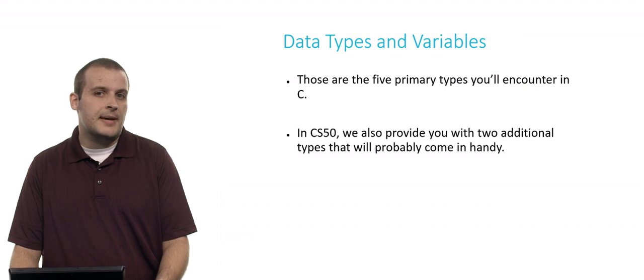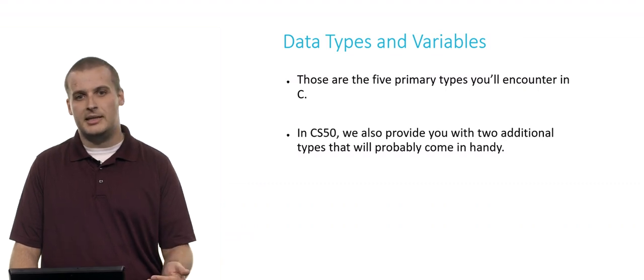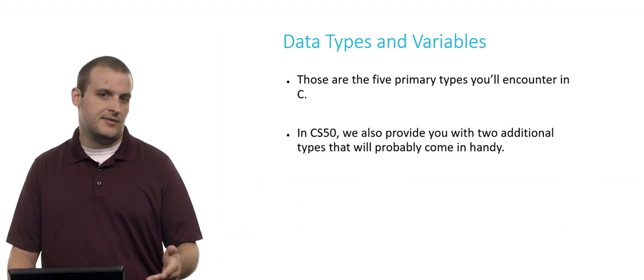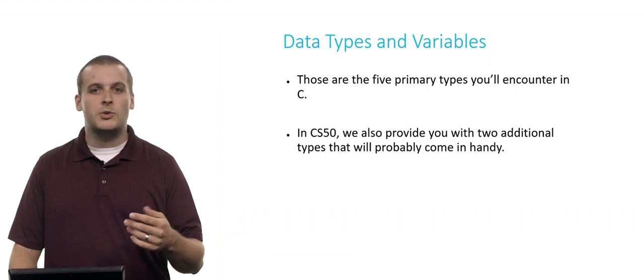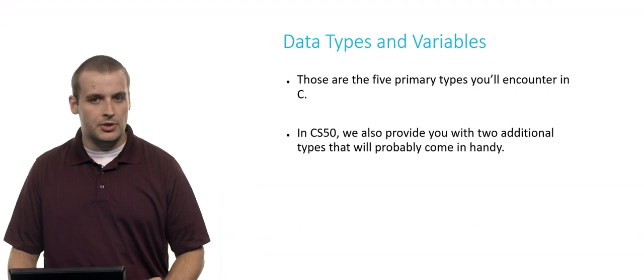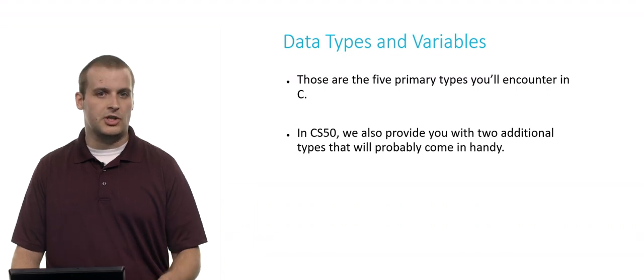All right. So those are the five types that you'll encounter that are built into C. But in CS50, we also have a library, CS50.h, which you can include, and which will provide you with two additional types that you'll probably be able to use on your assignments or just working generally programming.